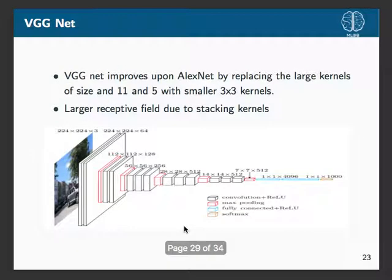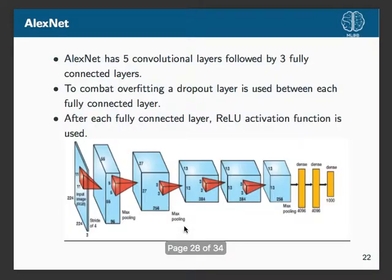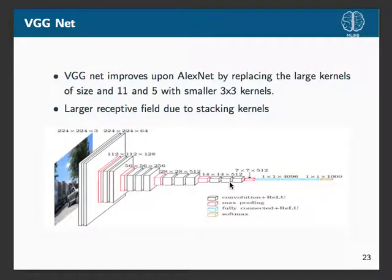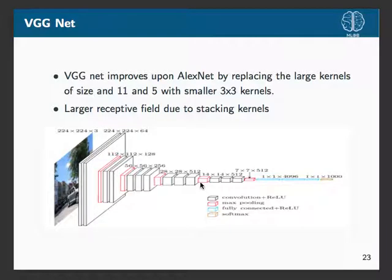Another architecture is VGGNet, which improves upon AlexNet by replacing the large 11x11 kernels with multiple smaller 3x3 kernels. This is advantageous because we get a larger receptive field with more small kernels. The architecture goes: image, convolution, max pooling, convolution plus ReLU, convolution plus ReLU, max pooling, more convolutions, max pooling, and so on. Finally, three fully connected layers with ReLU and a softmax.